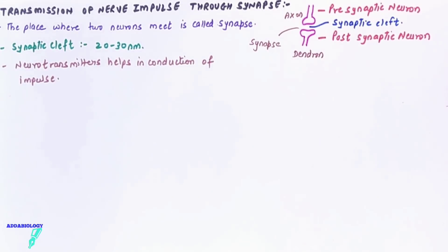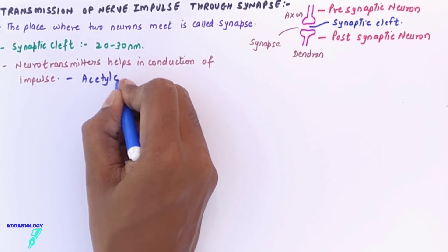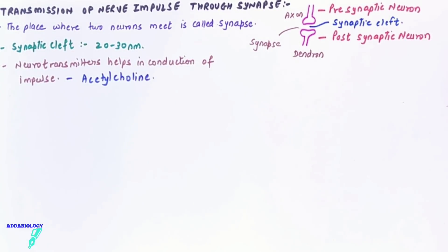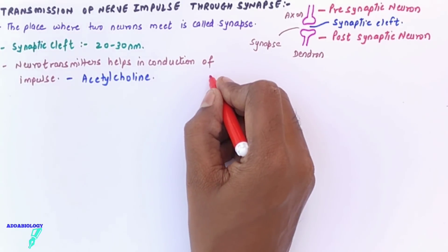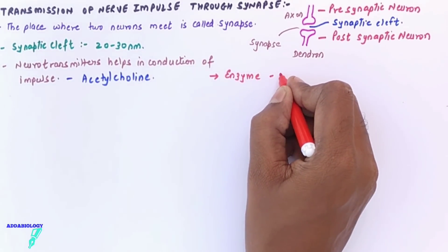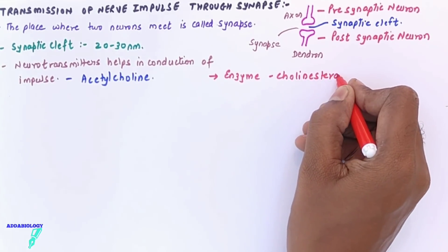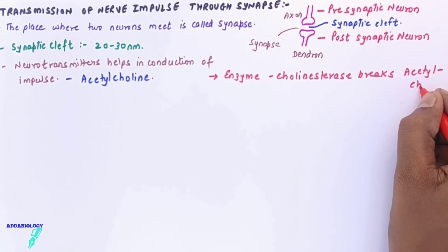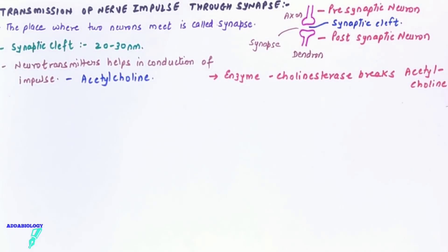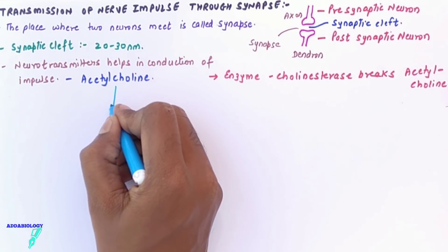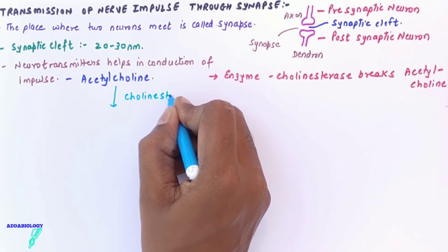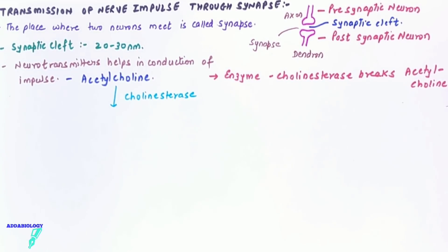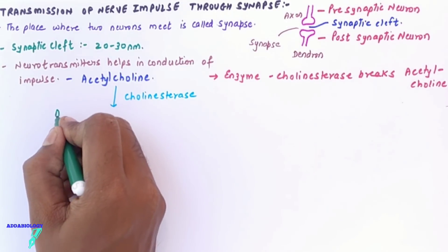This gap is filled up by special chemicals called neurotransmitters. Neurotransmitters are chemicals that help in the conduction of the impulse from one neuron to another. The impulse travels from the pre-synaptic neuron to the post-synaptic neuron with the help of acetylcholine, which is an example of a neurotransmitter. An important enzyme here is cholinesterase, which breaks acetylcholine into acetic acid and choline.